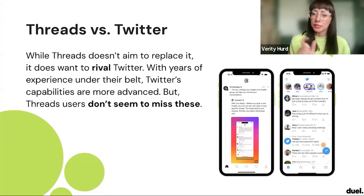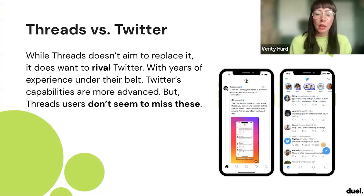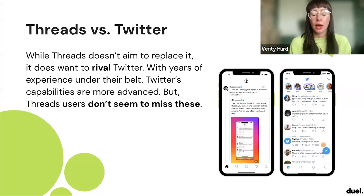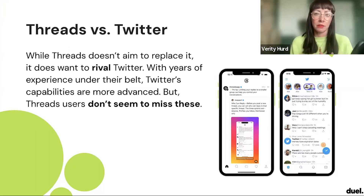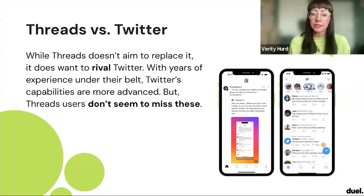Threads versus Twitter — Twitter is probably the most direct comparison right now. Threads has openly positioned itself as Twitter's rival. Twitter has been around a lot longer with more advanced features, but Threads is definitely working towards those capabilities too. Threads is trying to move towards more positive conversations — more entertainment, sports, music — rather than politics or hard news. It doesn't aim to replace Twitter, and if you're a brand with a Twitter marketing strategy, you probably still need to use both right now.